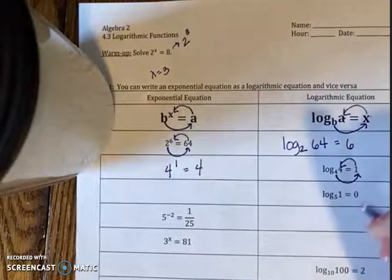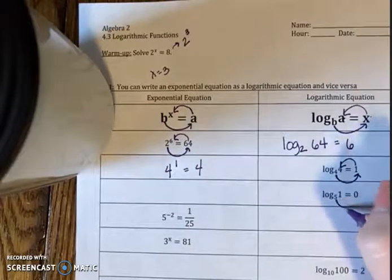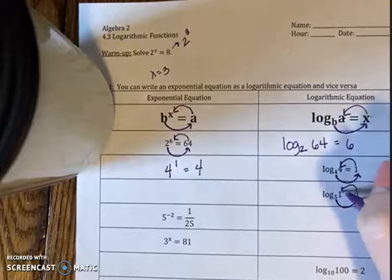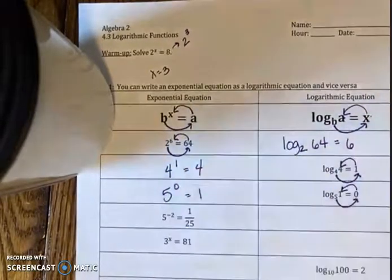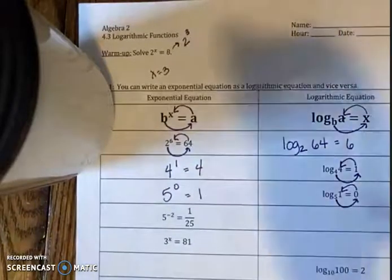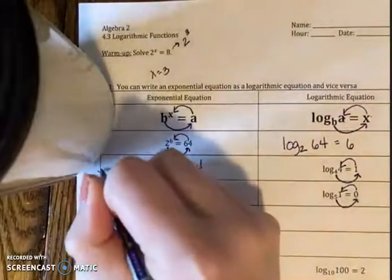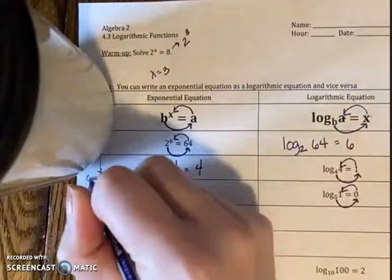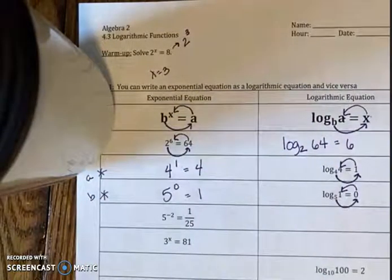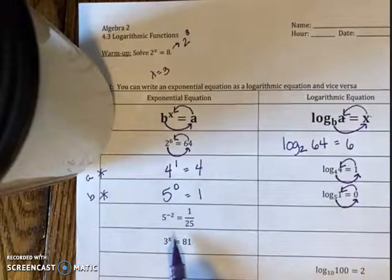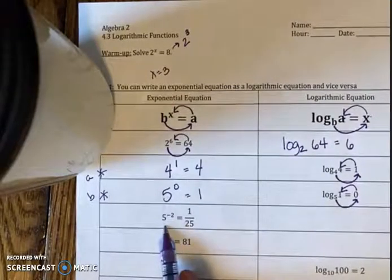Let's do it again. 5 to the 0 power will give me 1. I'm going to star these and label them a and b because we're going to come back to those later.